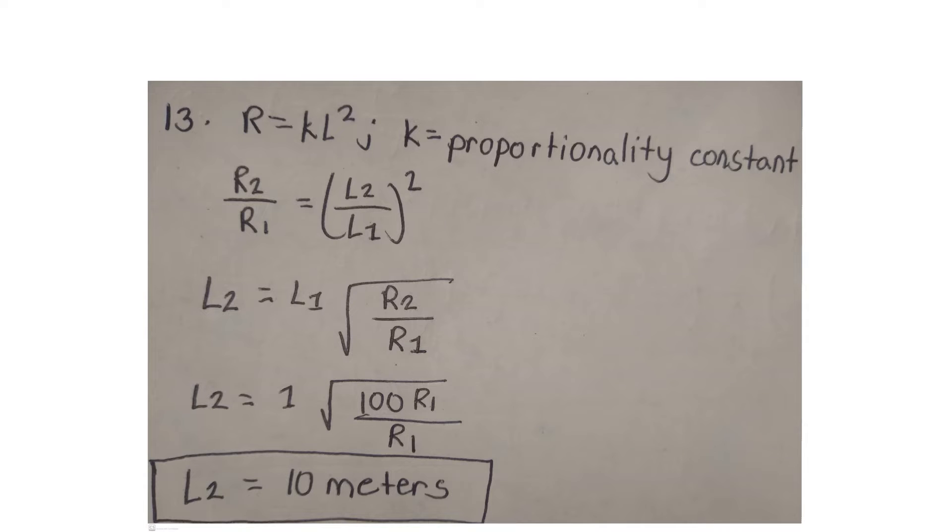We were asked to find the final length of the rod. So for this we will use the formula: resistance is equal to proportionality constant multiplied by the square of the length.